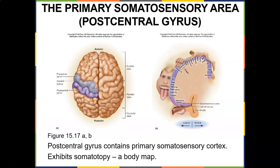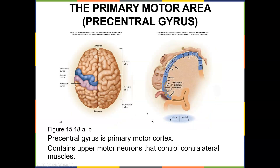The primary somatosensory area is the post-central gyrus. Notice how much of it is dedicated to your tongue, face, and hands. The tongue, face, and hands have a disproportionately large representation compared to the abdomen or hips. Most of our sensation comes from those three areas.